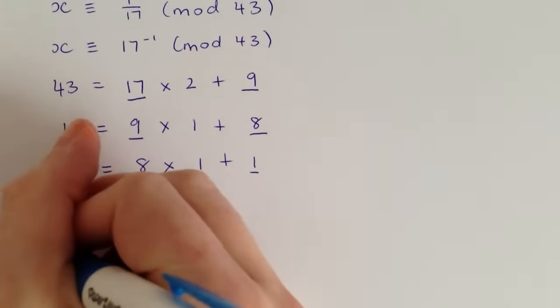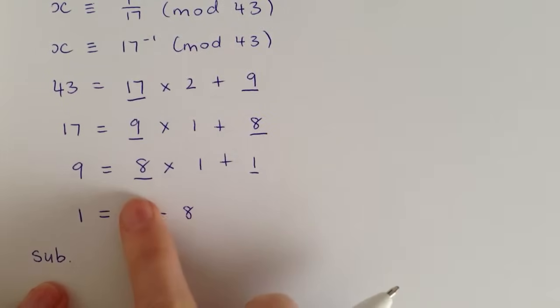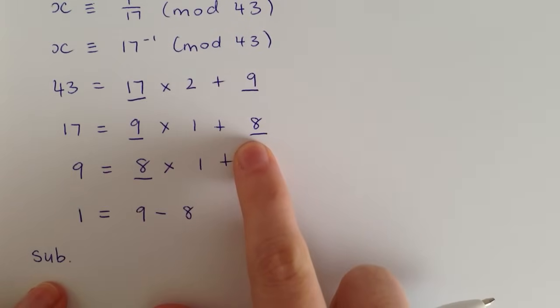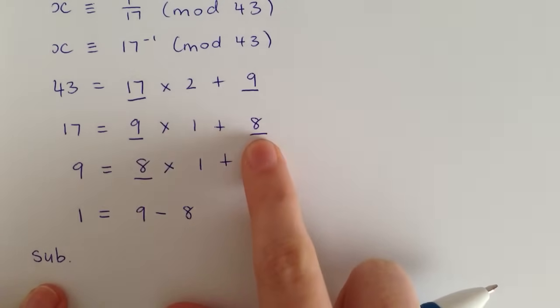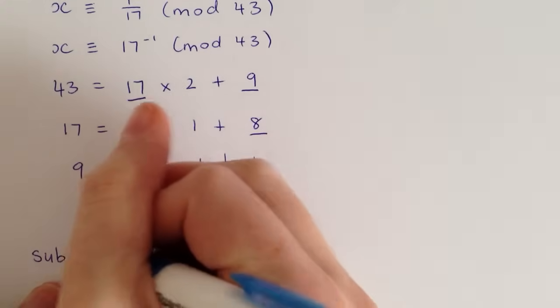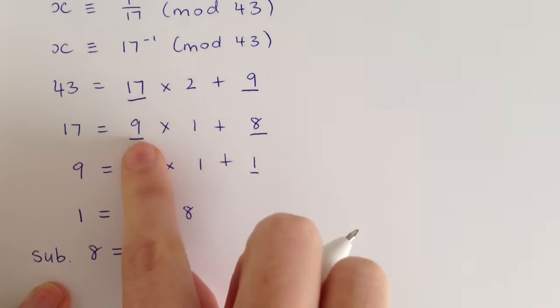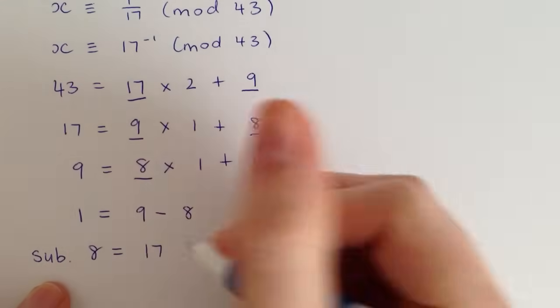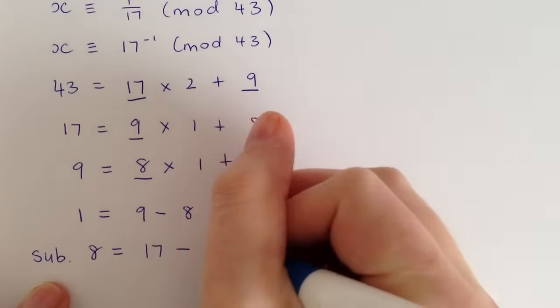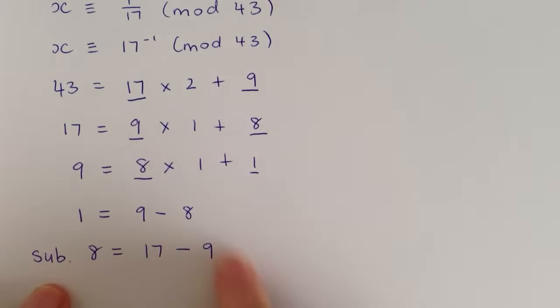So now we want to sub in. We've already worked with this equation, so we want to work back up the Euclidean algorithm and sub in this equation here. We want it in terms of this number on the end again. So same as before, just take this 9 times 1 over the other side. So that gives us 17 minus 9, again times 1, but we can just leave it off.